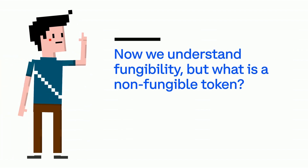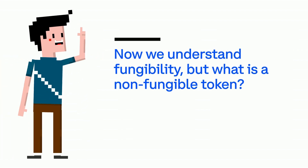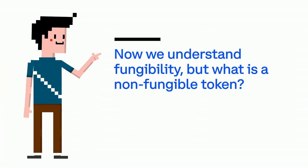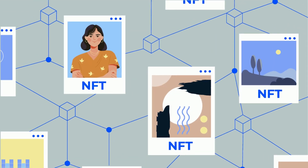Now we understand fungibility, but what is a non-fungible token? It's a special crypto token that has a unique piece of code attached to it, and that unique piece of code proves that the token is one of a kind.